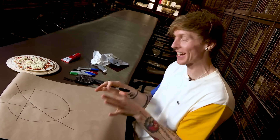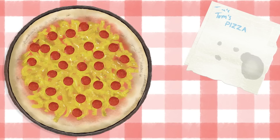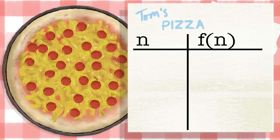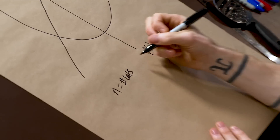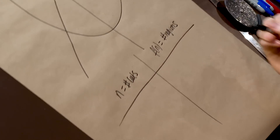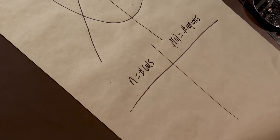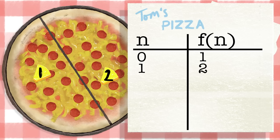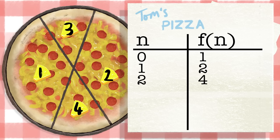But we only care about the number. So I'm going to start keeping track of this. If we say n is the number of cuts, then f is going to equal the number of regions. If I have zero cuts, I have one region. If I have one cut, I have two regions. If I had two cuts, I had four regions. And then I've added a third cut and I've got seven.